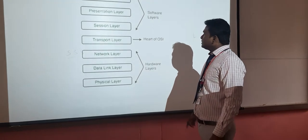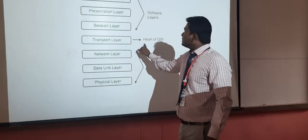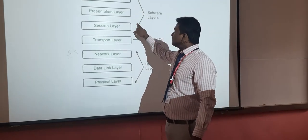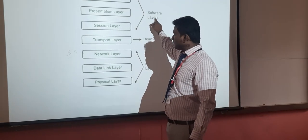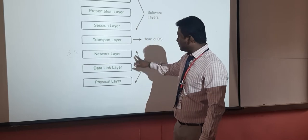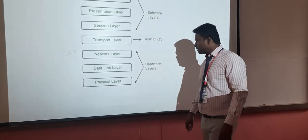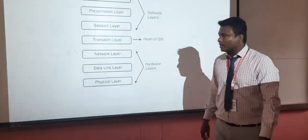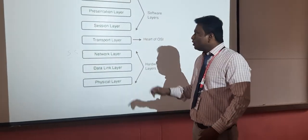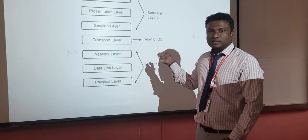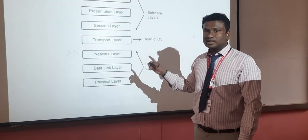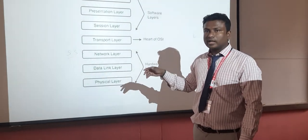These seven layers are the heart of the OSI model. The top three layers are called software layers, and the bottom three layers are called hardware layers. The OSI model was invented by ISO, the International Standard Organization.